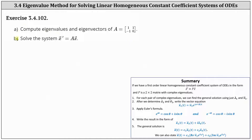Let's begin by determining the eigenvalues. To do this, we set up the equation: the determinant of the difference of A and lambda I equals zero, and then we solve for lambda.